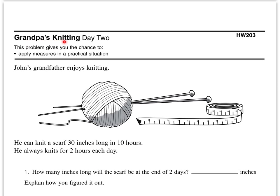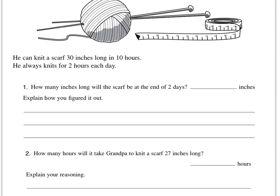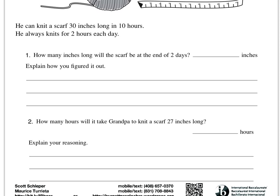Here we are with Grandpa's Knitting — Day 2. John's grandfather enjoys knitting. He can knit a scarf 30 inches long in 10 hours, and he always knits 2 hours each day. How many inches long will the scarf be at the end of 2 days? Since he knits 2 hours each day, after 2 days he should have knit 4 hours worth. So we compare 4 hours to an unknown amount of inches, as 10 hours is to 30 inches. We cross-multiply those and solve to get the length of the scarf at the end of 2 days.